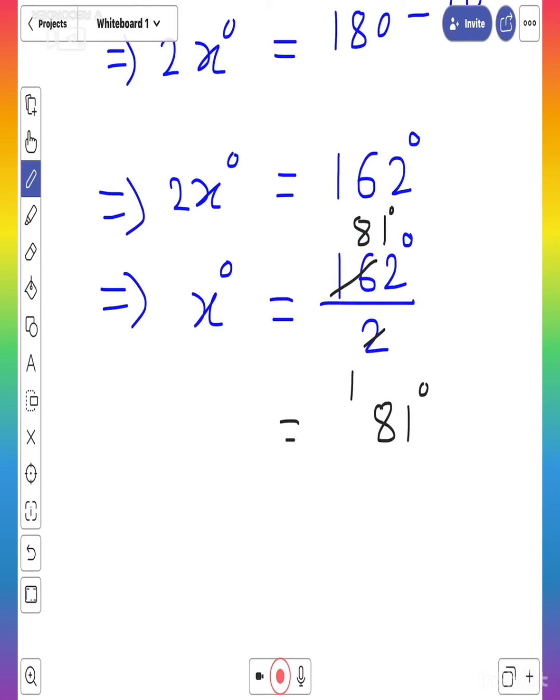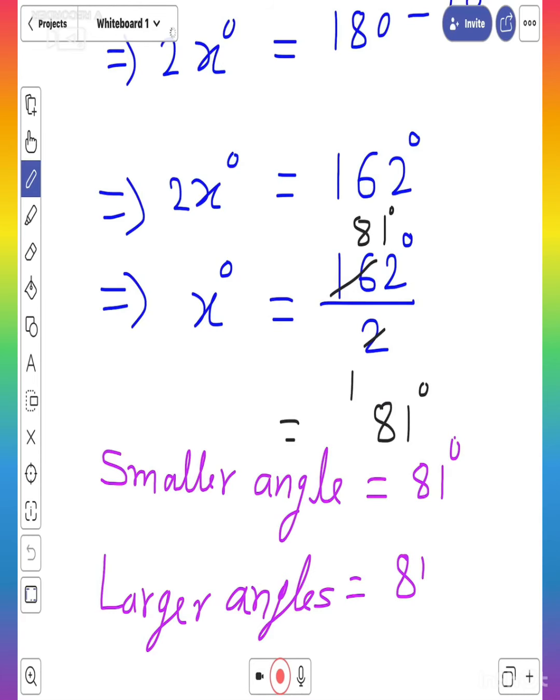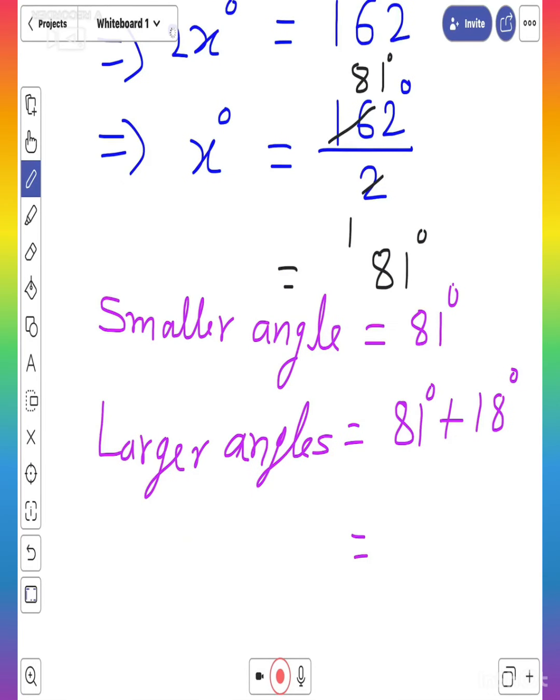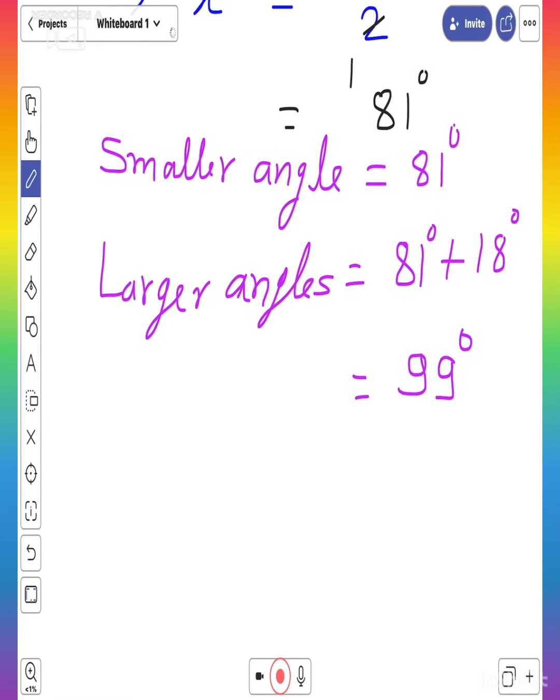So the smaller angle is 81 degrees. And the larger angle is 81 degrees plus 18 degrees, which is 99 degrees.